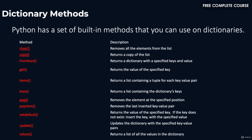The items method returns a list containing a tuple for each key-value pair. The keys method returns a list containing the dictionary's keys. The pop method removes the element at the specified key. The popitem method removes the last inserted key-value pair. The setdefault method returns the value of the specified key; if the key does not exist, it inserts the key with a specified value. The update method updates the dictionary with specified key-value pairs. The values method returns a list of all the values in the dictionary. Let's dive into our notebook.